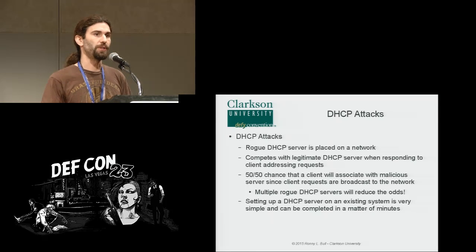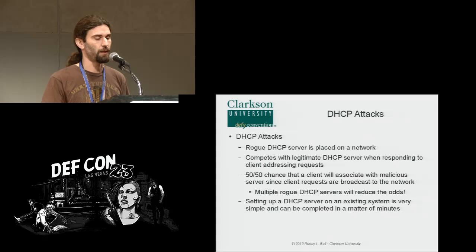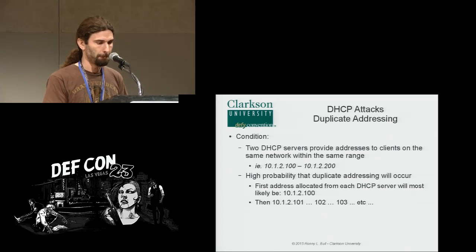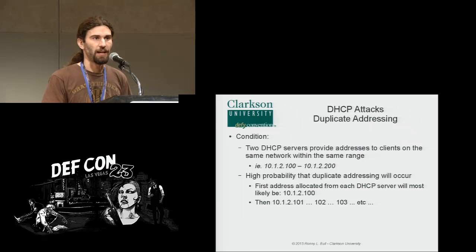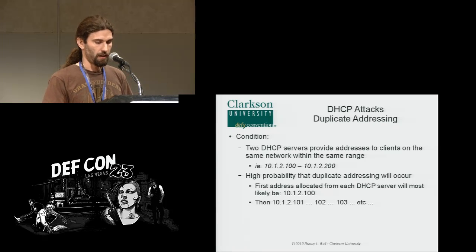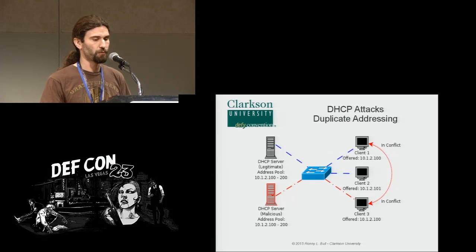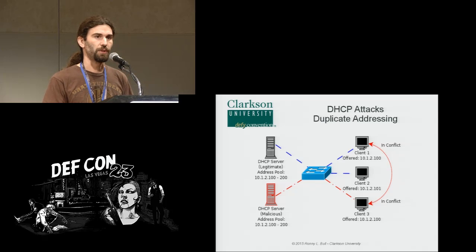To perform a DHCP attack, we put a rogue DHCP server we control on the network to compete with the legitimate server in providing address information to clients. This has roughly a 50/50 chance of success, and deploying multiple rogue servers increases that probability. This is very simple — we used dnsmasq, which can be set up in about five minutes on a basic CentOS VM. One scenario is duplicate addressing: we identify the IP range the legitimate DHCP server is handing out, mimic that on the rogue server, and cause duplicate addressing conflicts resulting in denial of service.